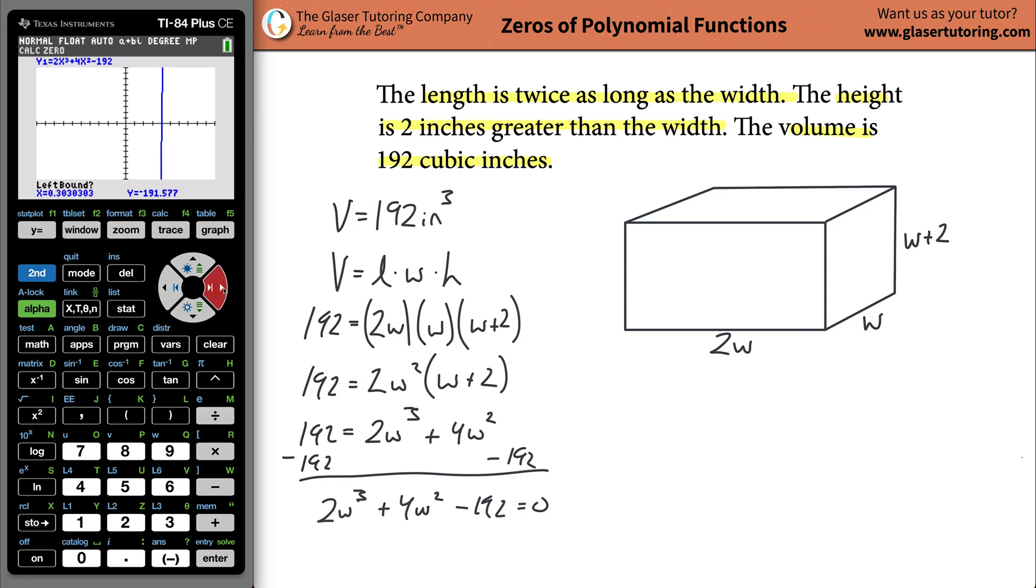You're going to move your target to the left bound, left of the intersection point. This point is roughly going to be four, so leave it to the left of four, meaning less than four. Hit enter, then move it to the right of four. Then it says to guess, meaning try to get it close enough. Hit enter.